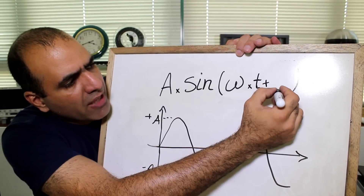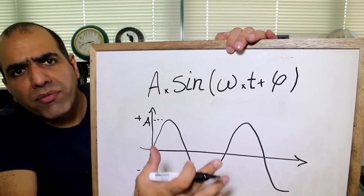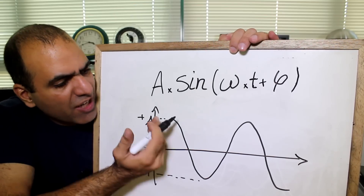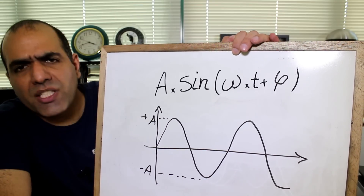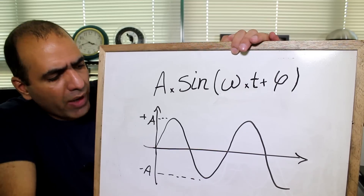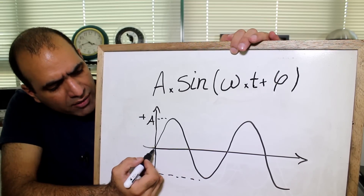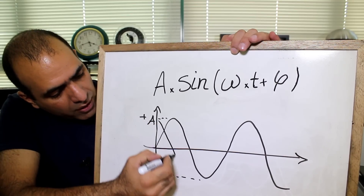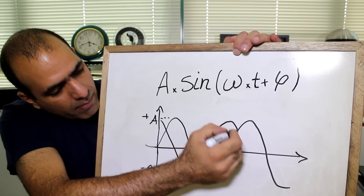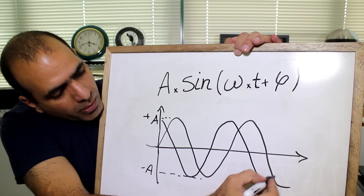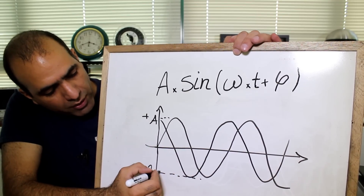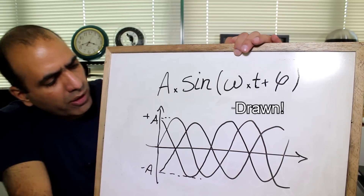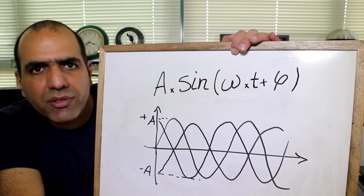Phi is just the fixed angle we add. Without phi, we always start at zero. But with phi, we can shift our waveform. For example, in a three-phase line, we have one phase that starts at zero, another one shifted 120 degrees, and the third one shifted minus 120 degrees. They also call phi the phase shift.